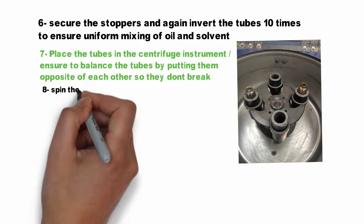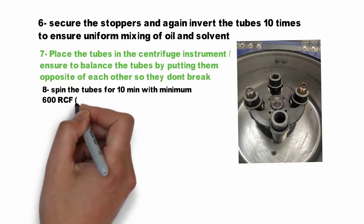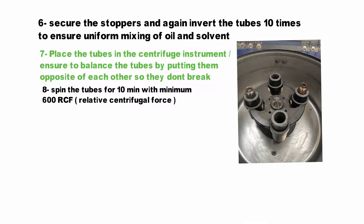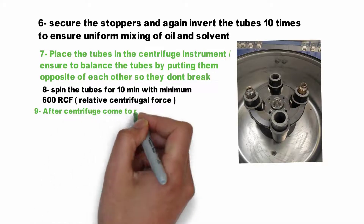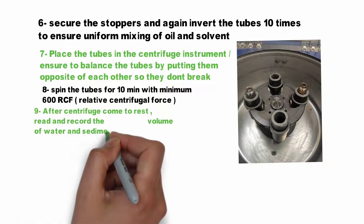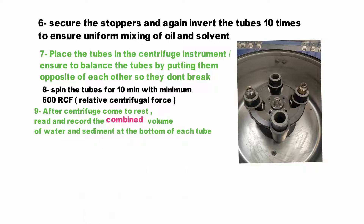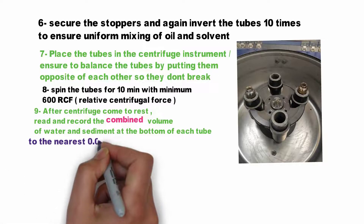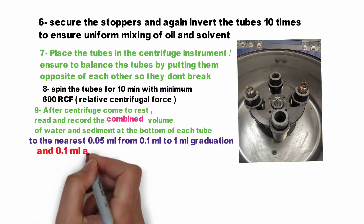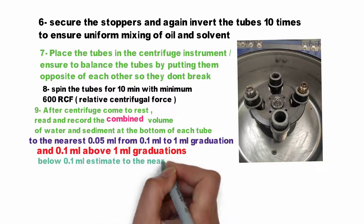Spin the tubes for 10 minutes with a minimum of 600 RCF. After the centrifuge comes to rest, read and record the combined volume of water and sediment at the bottom of each tube. Read to the nearest 0.05 ml from 0.1 ml to 1 ml graduation. Read to 0.1 ml above 1 ml graduation. If the BSW is below 0.1 ml, estimate to the nearest 0.025 ml.